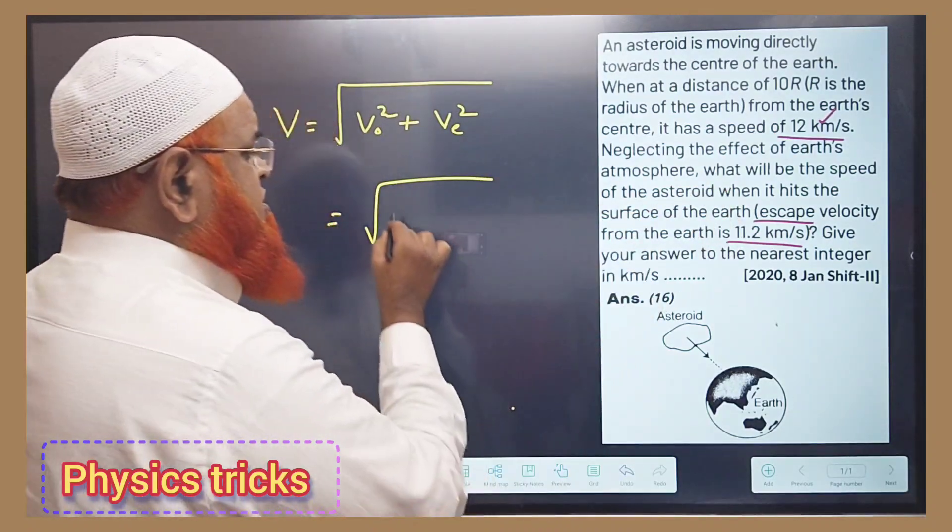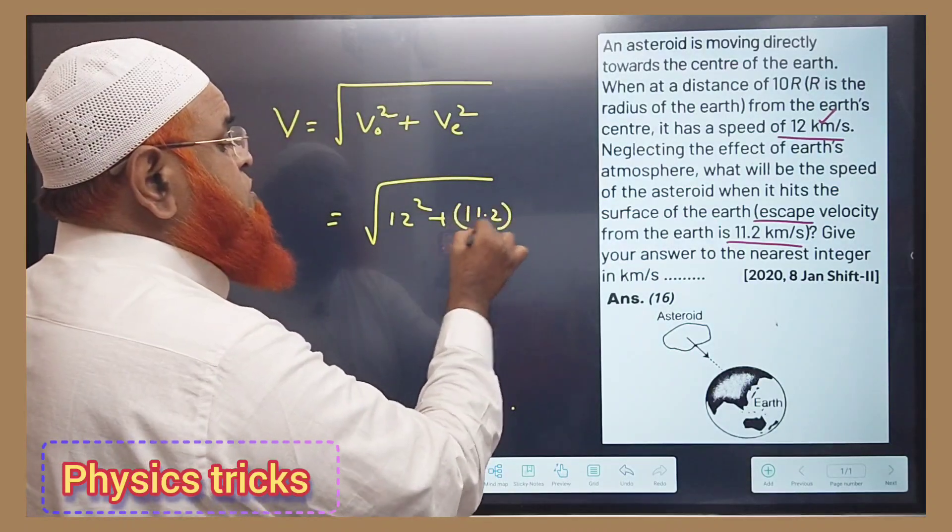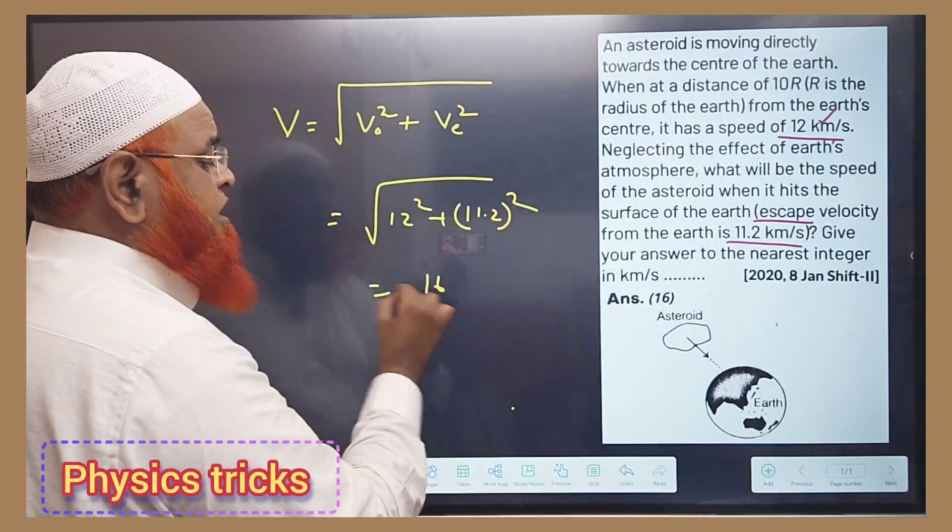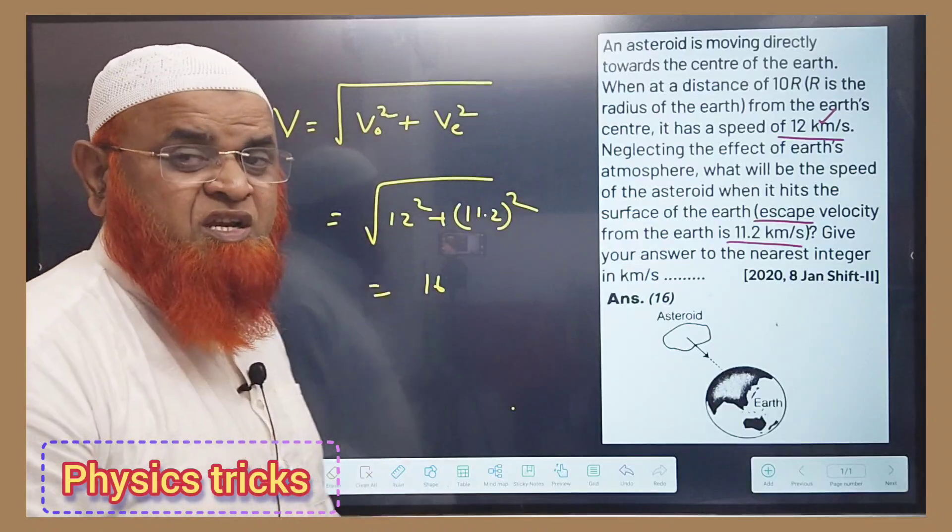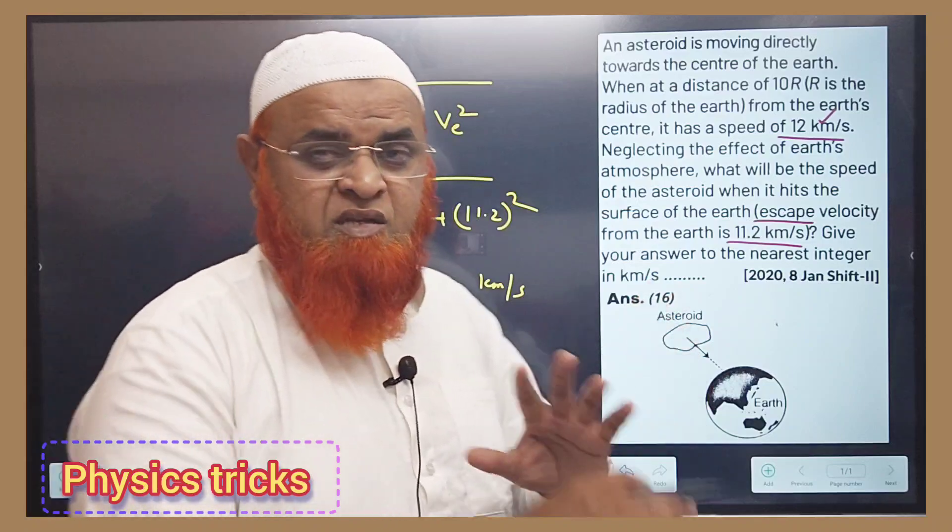So the orbital velocity is given as 12 km/s. You can see it's 12 squared plus 11.2 squared. If you calculate, you will get approximately 16 kilometers per second. That's it. Your answer is ready.